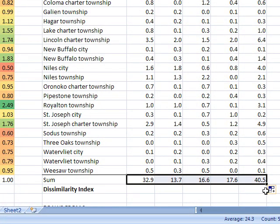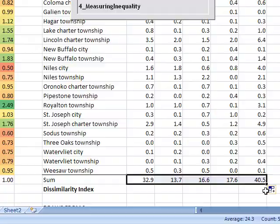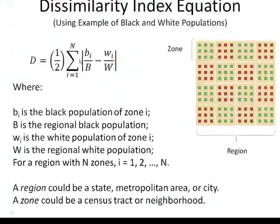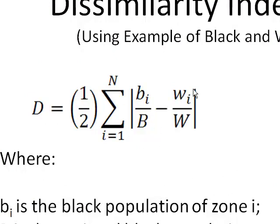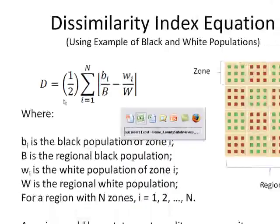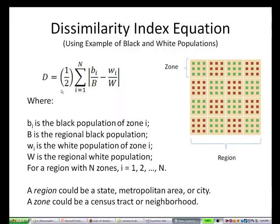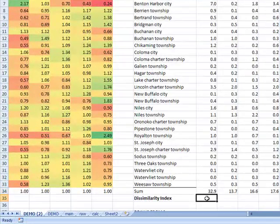Now I've summed across all of the zones — in this case zones or municipalities. The next step, going back to the formula: what we've done so far in Excel is the first step of taking the absolute differences, the second step was to sum them across the zones, and now this third step to construct the dissimilarity index is to divide by two.